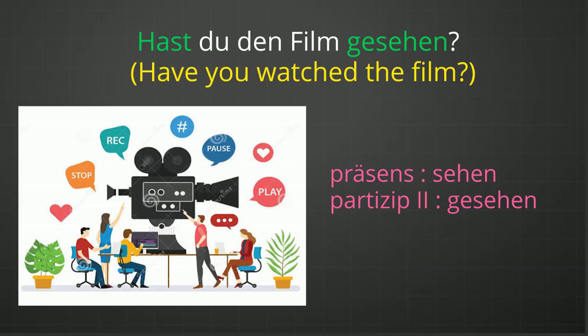"Hast du den Film gesehen?" Gesehen is the Partizip II form of the verb sehen, which is a Haben verb. That means it has to be used with Haben. And that is why the conjugated form of Haben is at first position, as this is a yes/no question, and gesehen is written at the end of the question — according to the rule of the Perfekt sentence.